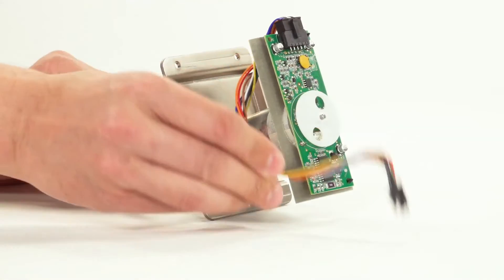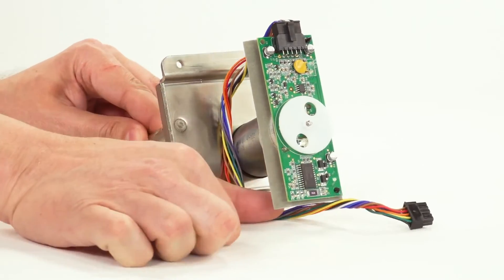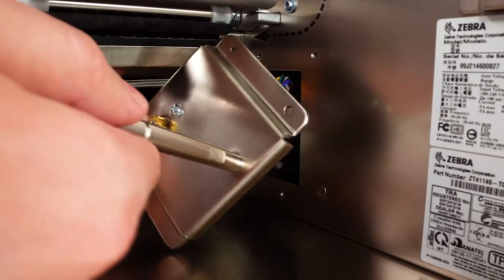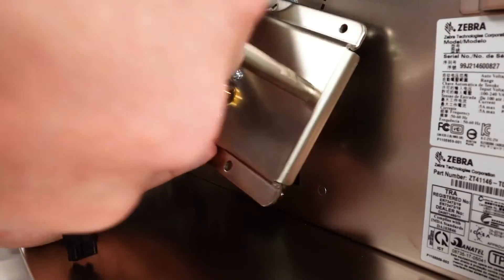Route the liner take-up cable down and under the motor and then through the notch in the mounting bracket. Tilt the motor slightly to insert the top of the liner take-up motor board into the mounting hole.